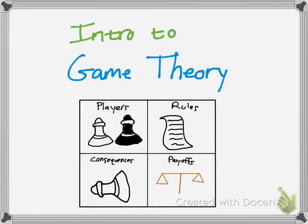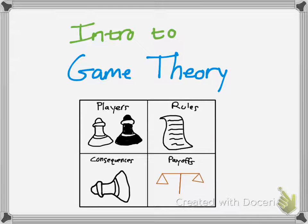You can think of a basic game such as rock, paper, scissors. There are two players, pretty much three rules — or well a few more than that — but the general rules are you can choose between rock, paper, or scissors. Each thing beats another, and there are consequences to losing. It's a strategy to see how you can play the game.